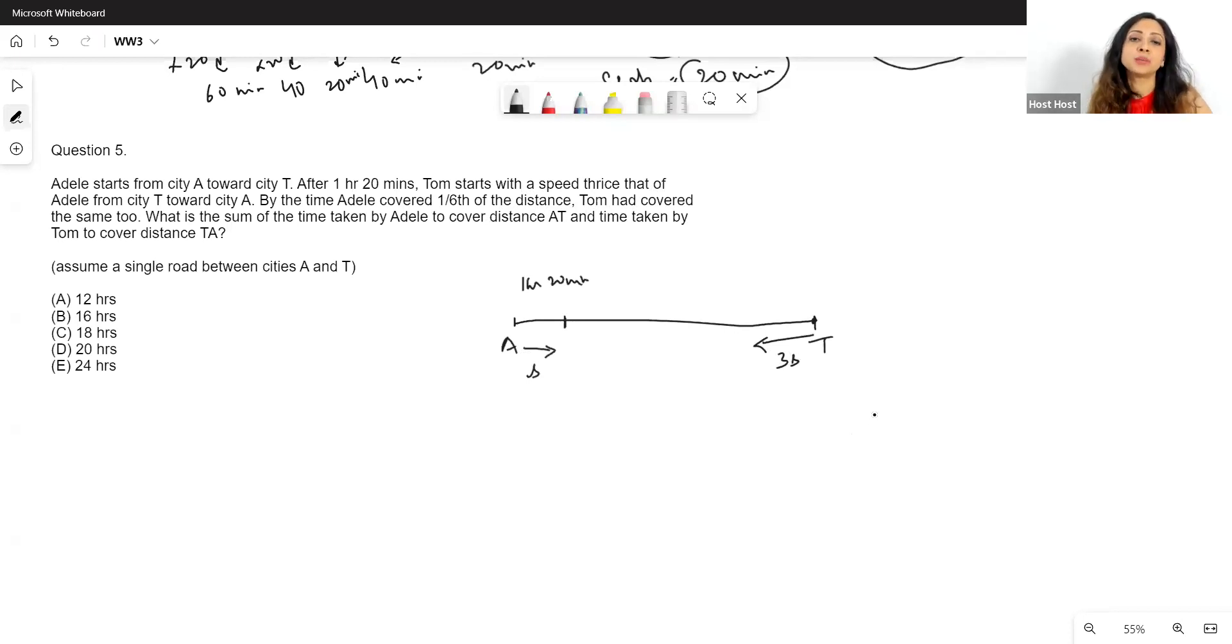Tom starts with a speed thrice that of Adele from city T towards city A. So Tom starts from here. Here, if Adele's speed was S, Tom's speed is 3S. And the moment I see this, it makes me really happy because I know I'll be able to use my ratios. I have the ratio of their speeds, which is given to me as 1 is to 3. I mean, I'm sure it'll come in handy. Now, by the time Adele covered one sixth of the distance, let's say this is one by sixth of the total distance. Tom had covered the same too. So Tom had started from here and Tom also covered one sixth of the total distance.